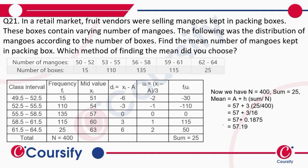First we find out the midterms, then we find out the deviation, and then we find out uᵢ. We already have fᵢ, so when we multiply fᵢ by uᵢ we get −30, −110, 0, 115, 50. The summation of fᵢuᵢ is 25 and the summation of frequency is 400. So when we put it in the formula,